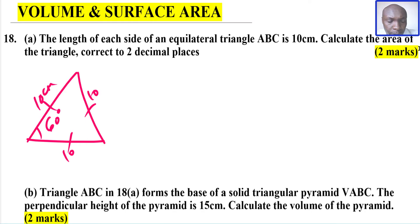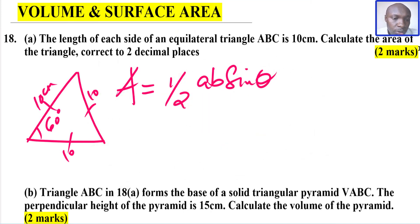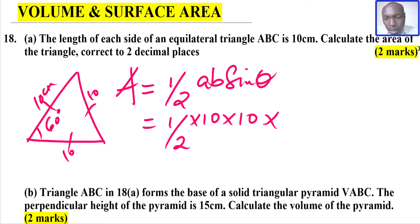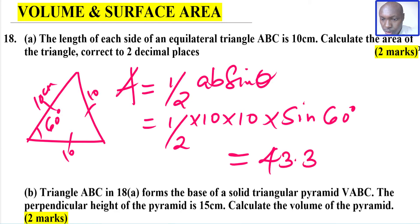I'm going to use the formula where we're given two sides and an included angle. Area equals one half times A times B times sine of theta, where A and B are the two sides and the angle is 60 degrees. So I have A and B both equal to 10, and the included angle is 60 degrees. Working this out gives 43.30 cm². That is how you get the area of that triangle.